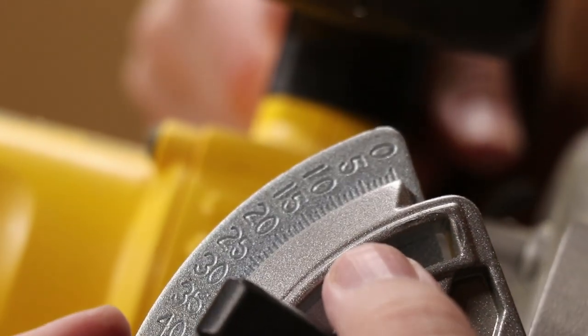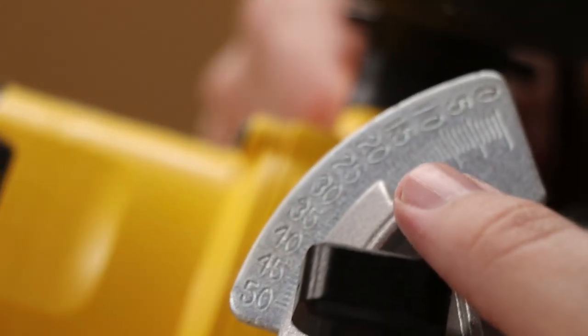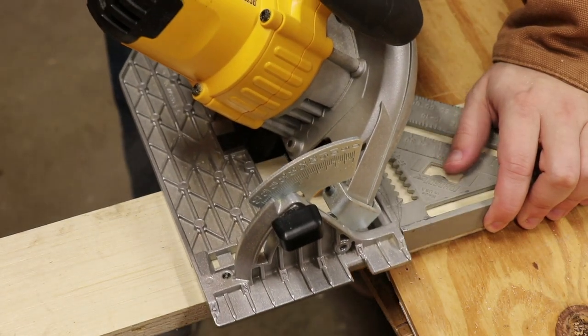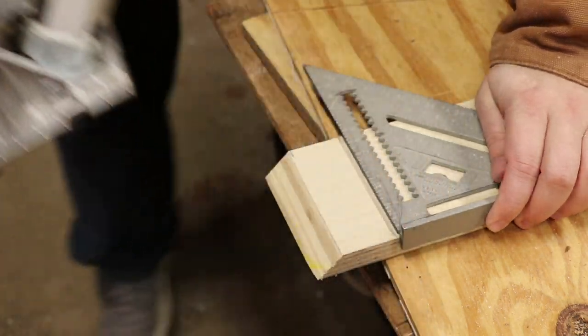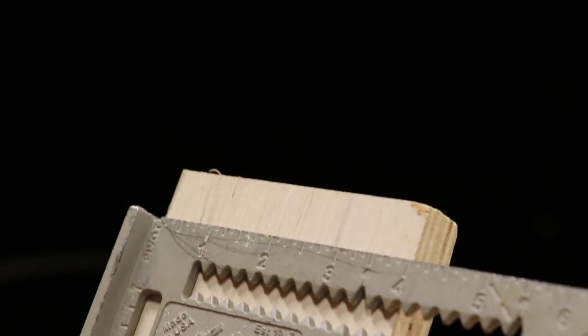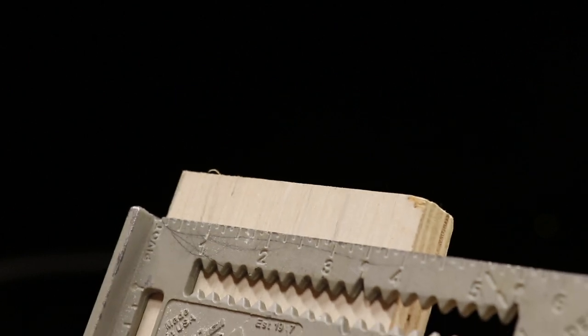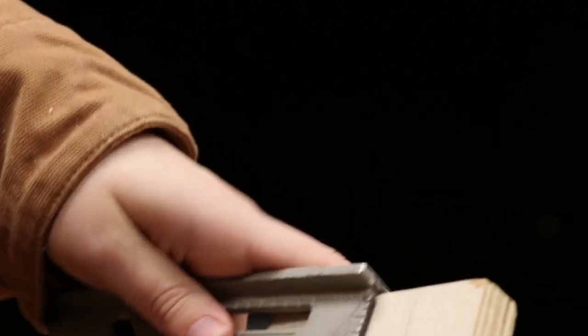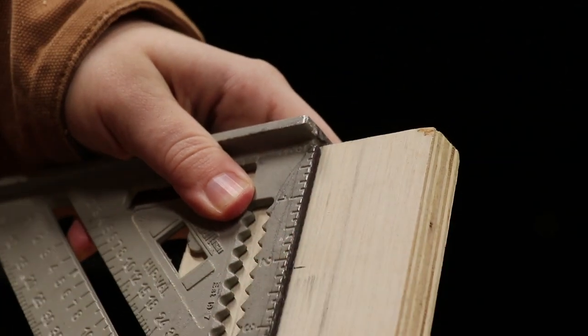You're gonna set your circular saw to about 35 degrees or so. All right, so this board is about four inches wide, so I'm gonna put the center mark about two inches. I want it about two inches down from the top, so I'll put a mark right in here.